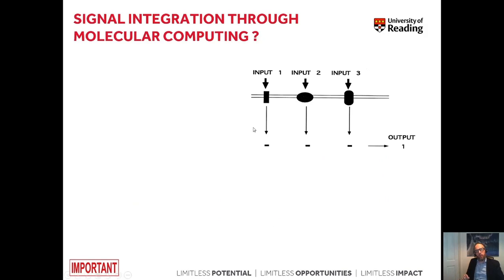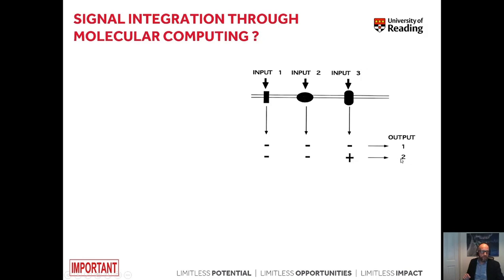So we have different signals that act as an input. If no signals are present, there is one particular output. If one signal is present but signals one and two are absent, we can have a very different output. If there are no signals received by the cell, this would, for example, lead to cell death because cell survival signals would be absent.